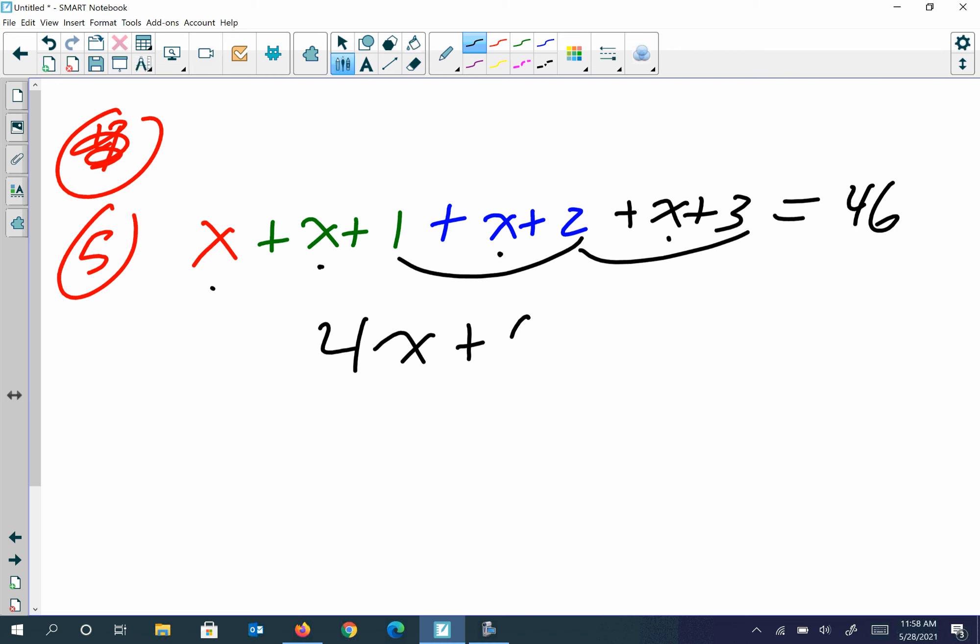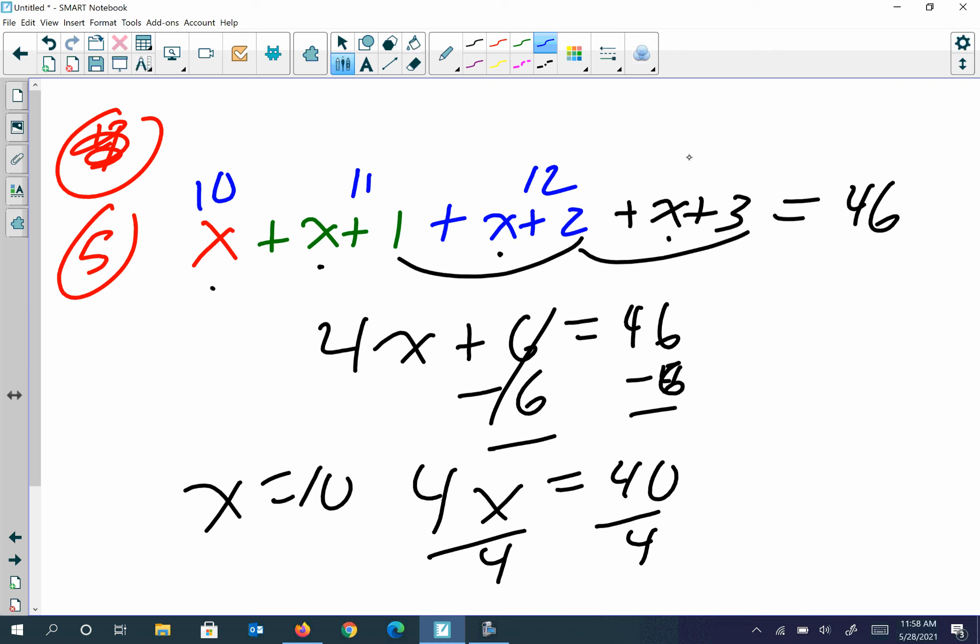That gives me 6, 1 plus 2 plus 3. Subtract 6 from both sides, it's going to be 4x because those cancel out, equals 40. Divide each side by 4, so x equals 10. So find the numbers: well that's 10, that's 11, that's 12, and that's 13. Those are all consecutive numbers and you add them up they go to 46.